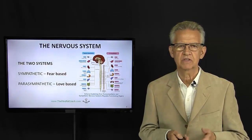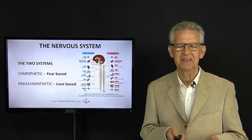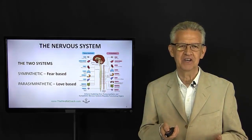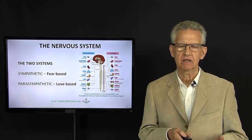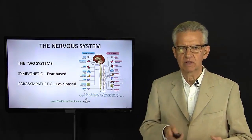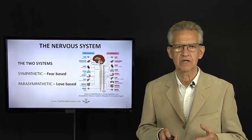So, the nervous system is simply illustrated here as having two systems. One is the sympathetic, and it tends to be fear-based. So, that's the one that's going to get us ready to prepare to run or to fight.